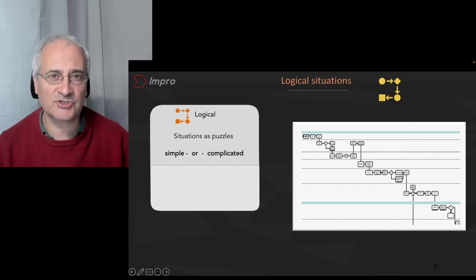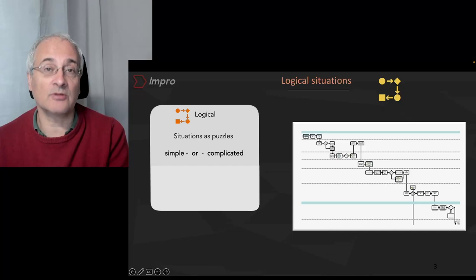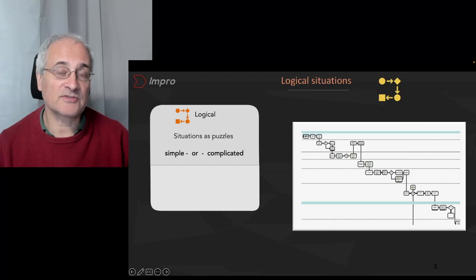They include developing processes and procedures, having audits, having measures and targets, having change using project management, risk analysis, all of these things. And the interesting thing about logical situations is the more we understand them, the more we can control them. And that's really key to why the methods for logical situations are so important.